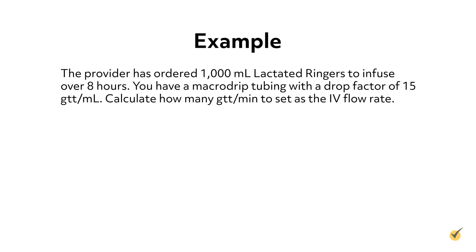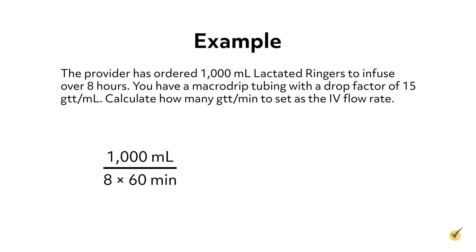The provider has ordered 1,000 milliliters lactated ringers to infuse over 8 hours. You have macrodrip tubing with a drop factor of 15 drops per milliliter. Calculate how many drops per minute to set as the IV flow rate. Using the formula: 1,000 milliliters divided by (8 hours × 60 minutes per hour), then multiplied by 15 drops per milliliter, equals 31.2, rounded to 31 drops per minute.